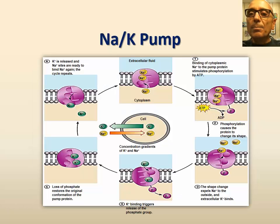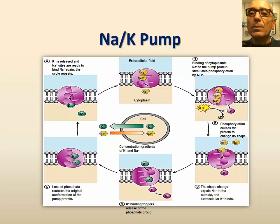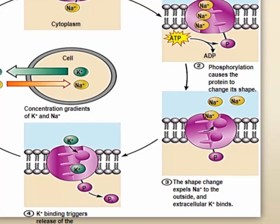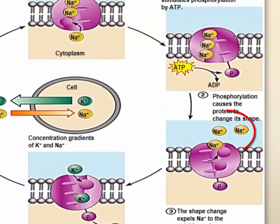The sodium-potassium pump is a common example of active transport involving an antiport protein system. In this system, the protein pump transports sodium ions and potassium ions against their concentration gradients across a cell membrane, using energy as ATP by moving sodium ions out and potassium ions into the cell. For every three sodium ions pumped out, two potassium ions are pumped in.